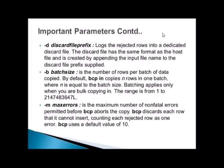The -d discard file prefix logs rejected rows into a dedicated discard file, which has the same format as the host file and is created by appending the input file name to the discard file prefix. Batch size (-b) is the number of rows per batch; batching applies only when bulk copying in, not out. Max errors (-m) is the number of non-fatal errors permitted before BCP aborts; each rejected row counts as one error, with a default of 10.